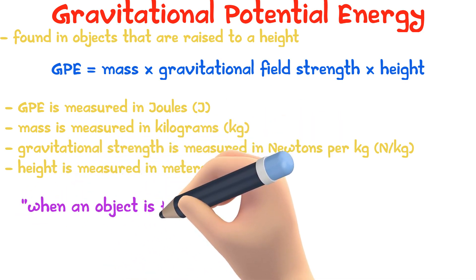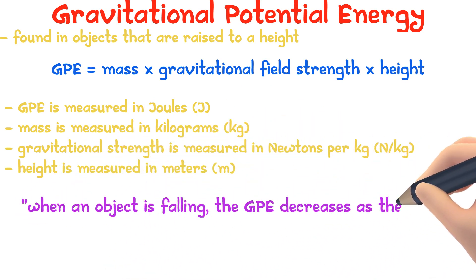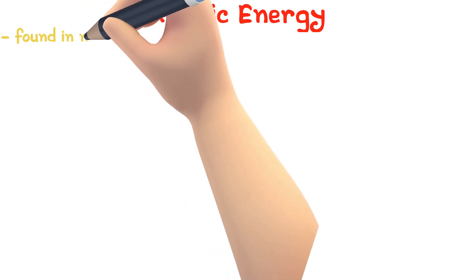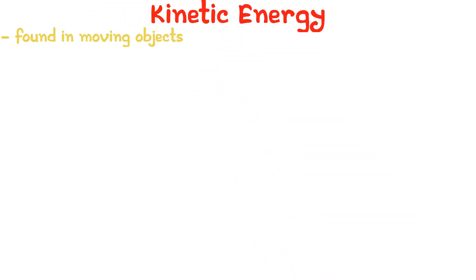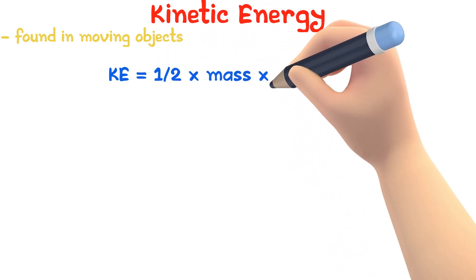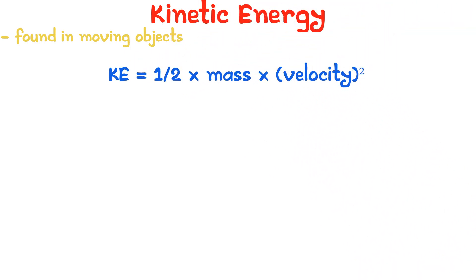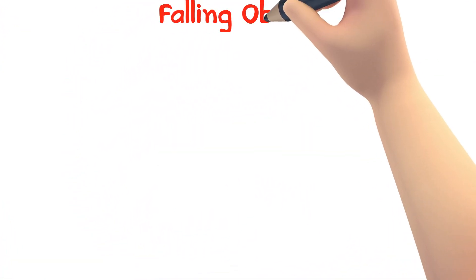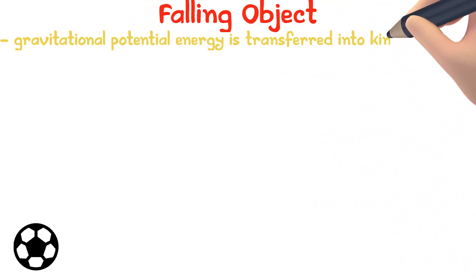When an object falls, it reduces the GPE because the height is decreasing. When an object falls from height, its gravitational potential energy is transferred into kinetic energy.